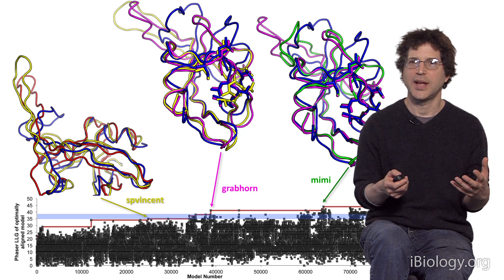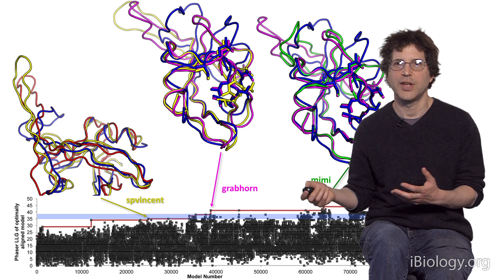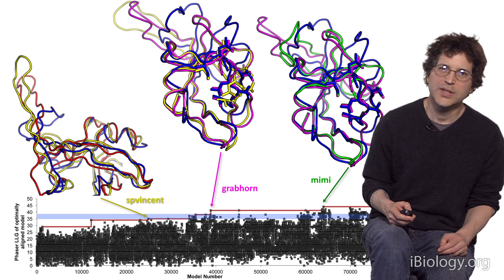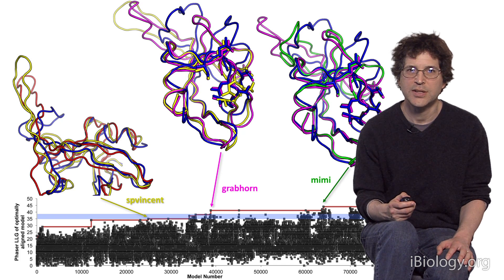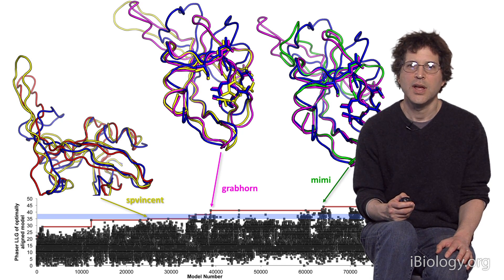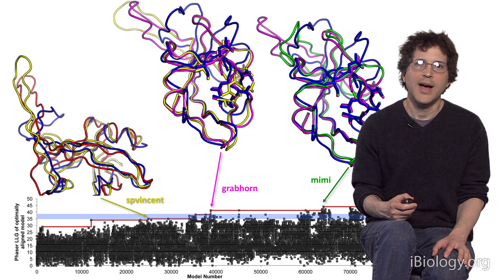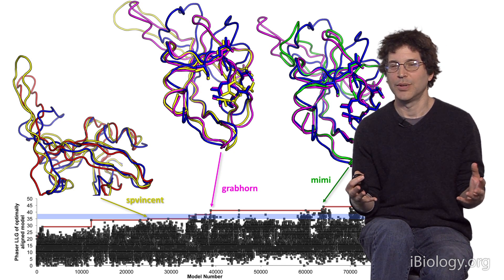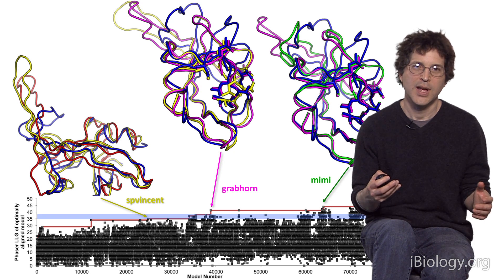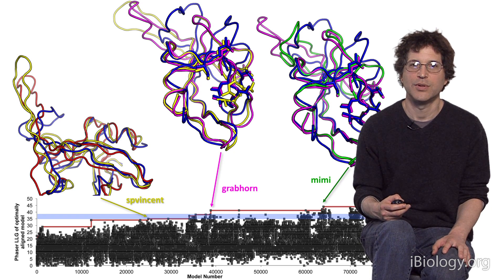The teams collaborate closely and compete with other teams in a friendly sort of way. This is the result of one team, and I'm going to show you the results of three teammates. The first teammate, named S.P. Vinson, took the red model and found a lower energy structure shown in yellow. In these diagrams, blue is the actual answer — the punchline is that the Foldit players solved the structure, shown in blue. Neither we nor the Foldit players knew what it was at the time they were working.